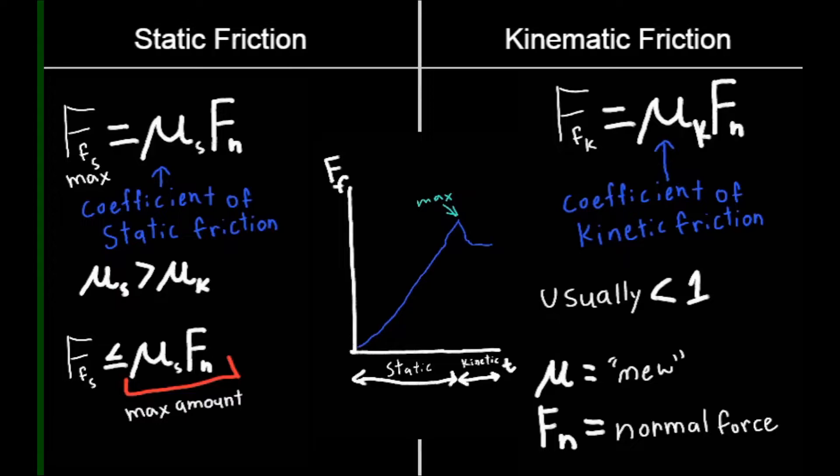These are the two equations for static and kinematic friction. The max static friction force is equal to mu times normal force. For kinematic friction, the force of kinematic friction is equal to mu times normal force. This mu value is the coefficient of static or kinematic friction. Usually, the mu of static friction is greater than the mu of kinematic friction because the object needs to experience a high frictional force before moving. That mu times normal force is the maximum amount for static friction.